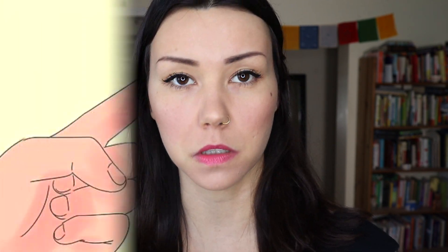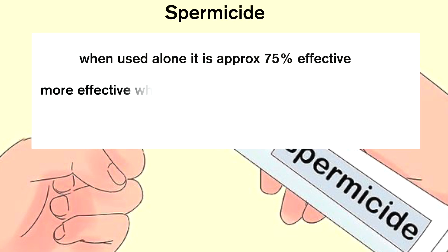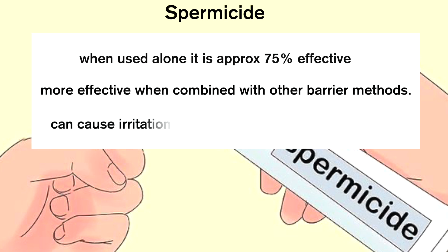Moving on to spermicide — this is not a barrier method, but worth including because some people do use it alone. Spermicide is about 75% effective. You can use it with other barrier methods for extra protection, and it's highly recommended that you do so. It can cause a lot of irritation and it does not prevent STDs.